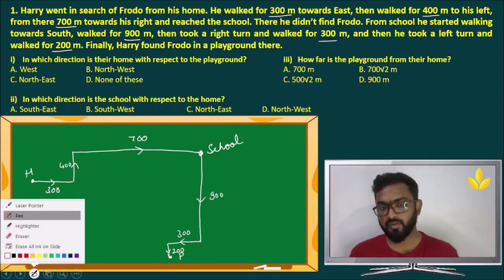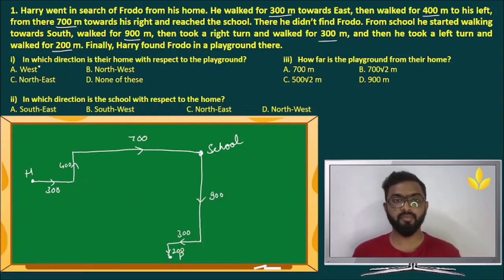Now let's start solving each and every sub question. Question number one, in which direction is their home with respect to the playground? Home with respect to the playground, that means we have to start from the playground. From playground to home, this direction is northwest. Answer is B, northwest. From playground to home. Playground with respect to home would have been southeast, but this is northwest.